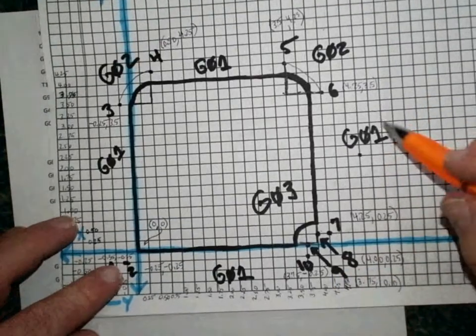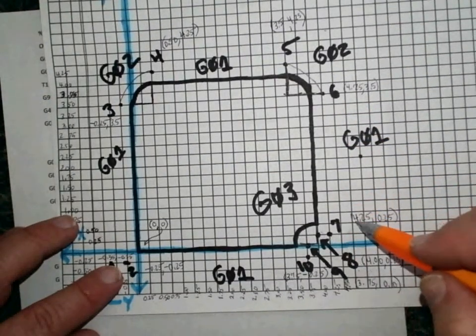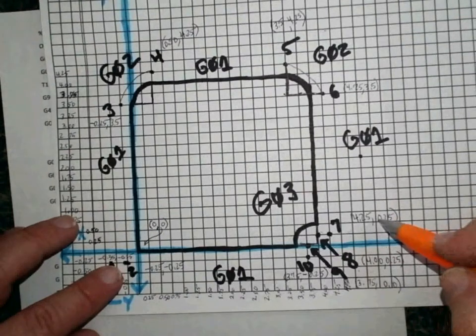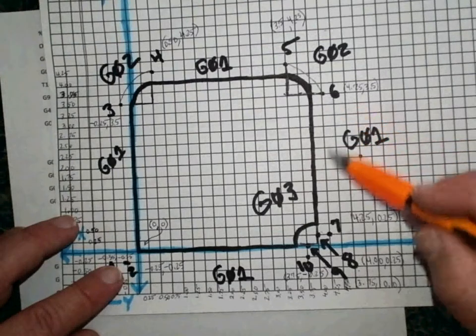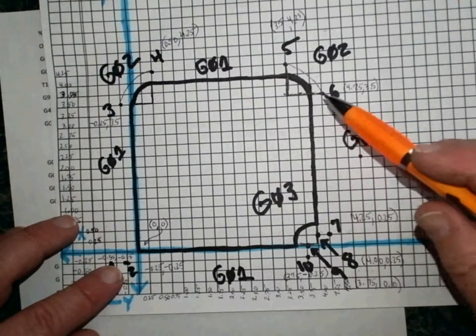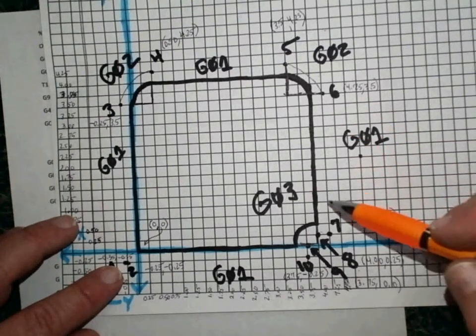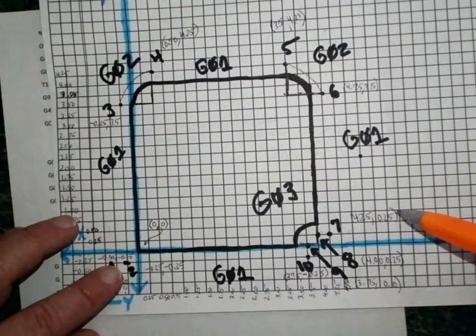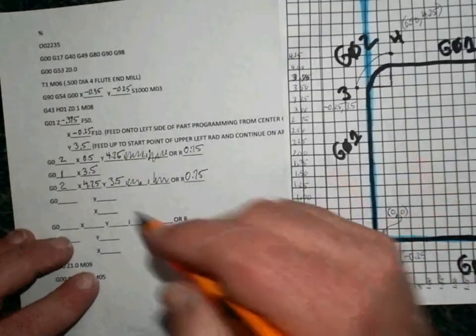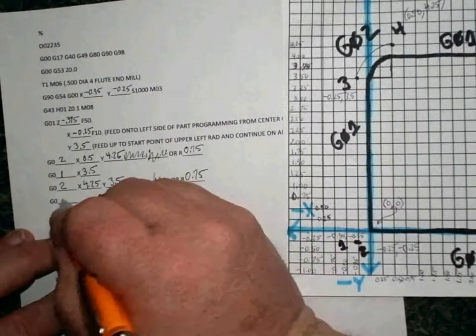Alright, our next move, just a simple G01 down to point number 7. We decided the coordinates there were 4.25 and 0.25. In this move from 0.6 to 0.7, we're not moving any in the X direction, we're moving vertically down to a different Y location. So we're only going to worry about the Y here of 0.25. So we'll pencil that in, 0.25. And again, it is a G01 as we've noted right here.